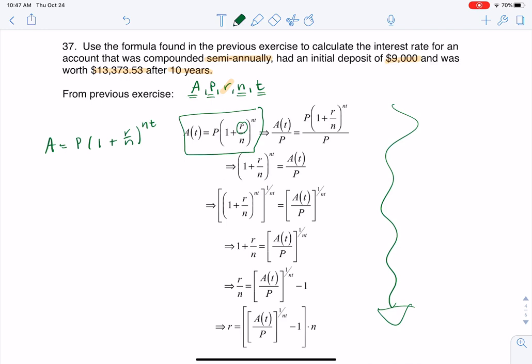So if I work through this and I sub in, we have $13,373.53 equaling $9,000 times 1 plus my variable that I'm looking for, R over 2 to the 2 times 10.